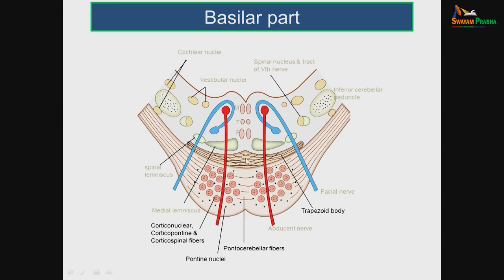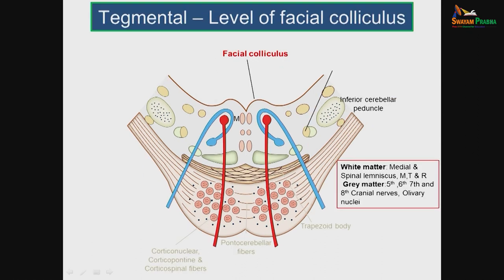Just posterior to the basilar part is the trapezoid body. At the facial colliculus level (lower tegmental level), behind the trapezoid body is the medial lemniscus, which carries fibers from the nucleus gracilis and cuneatus. In the pons, these fibers rearrange from sagittal to coronal orientation — the cuneate fibers become medial and gracilis fibers become lateral. Lateral to that is the spinal lemniscus, the continuation of the lateral spinothalamic tract.